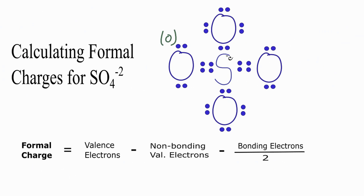Next let's do this oxygen here on the top. We know we have six valence electrons for oxygen. Non-bonding, we have 2, 4, 6. And then bonding, we have just the two here, 2 over 2.